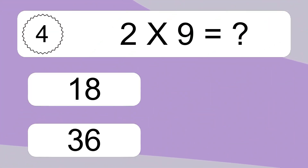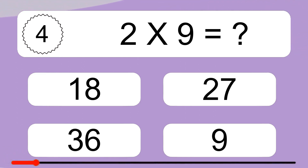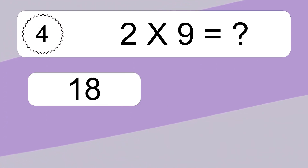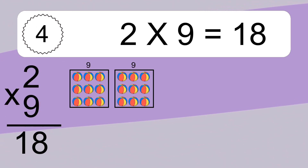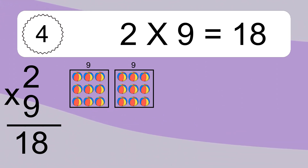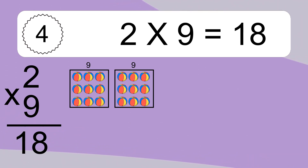2 times 9 equals what? We have 2 boxes, and each box has 9 colorful balls inside. If you count all the balls in all the boxes together, you will have 2 times 9 balls. This equals 18 balls.